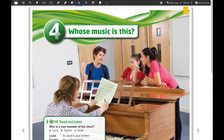Here we have Jacob — remember Jacob, this is a very famous soccer player in the story. Then we have Sophie, and she is Jacob's sister. Finally we have Lucia — remember that Jacob is in love with Lucia. And here we have the choir teacher. This unit is called 'Whose Music Is This?'